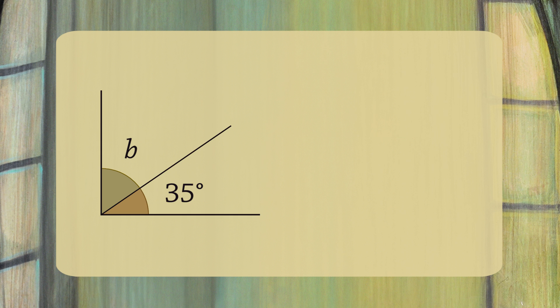Let's see another example. Suppose these two angles are complementary. What is the size of angle B? Well, if two angles are complementary, then their sum is 90 degrees. So 35 degrees plus B equals 90 degrees. If you solve for B, you get B equals 55 degrees.